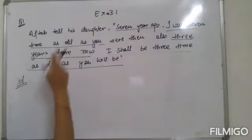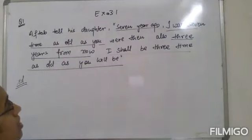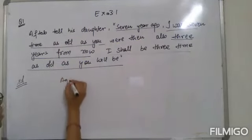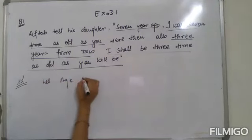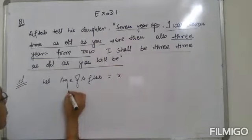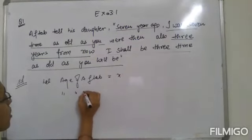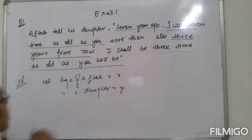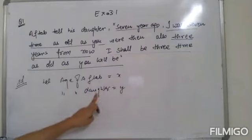The first condition is about 7 years ago. Let the age of the father be x, and the age of his daughter be y.